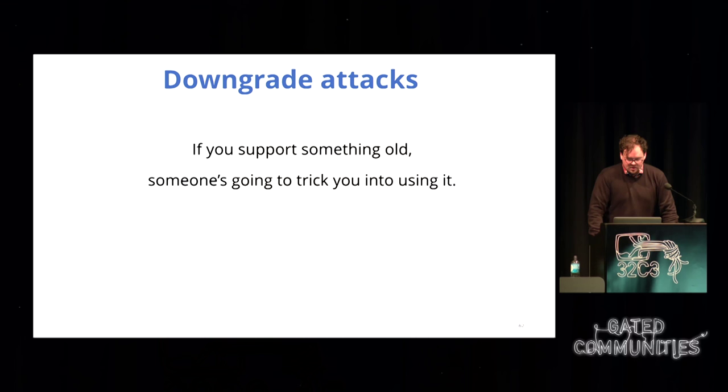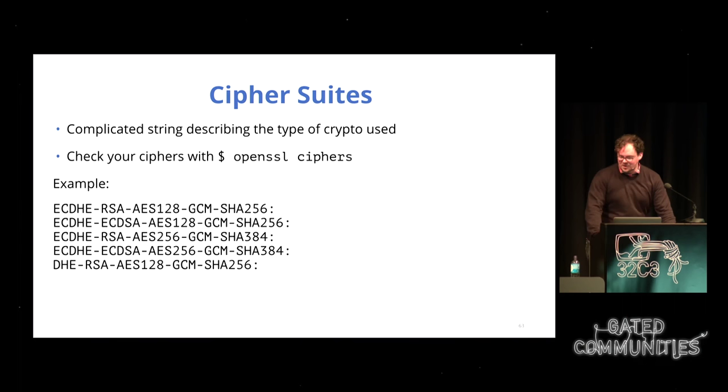A really bad thing about this is that for TLS 1.0 and 1.2, the only way to use block ciphers was in CBC mode. Unless you have both servers on TLS 1.2, you're kind of screwed. That leads us to another idea: the downgrade attack. The general philosophy is that if you support something old, someone's going to trick you into using it.